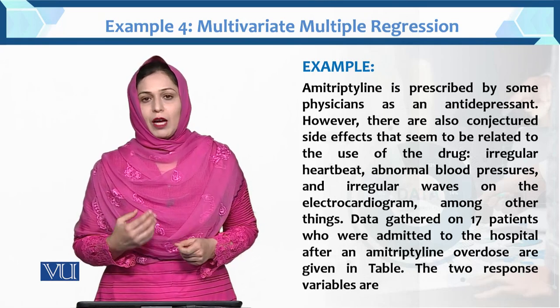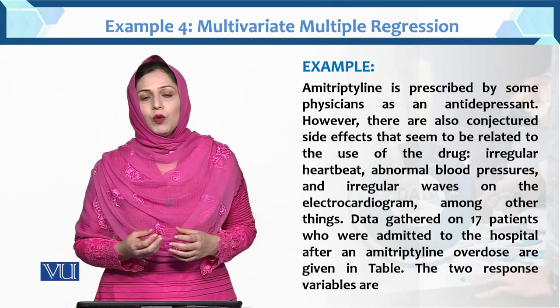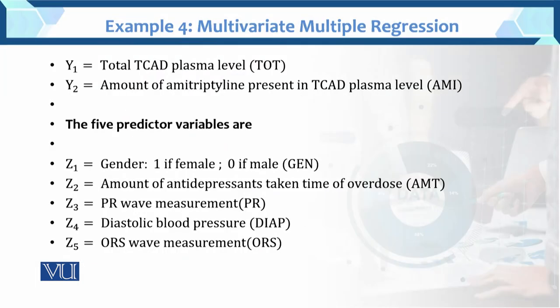There are two response variables, meaning we have two dependent variables. Y1 is the first dependent variable — the total TCDA plasma level, with notation TOT. And Y2 is also a dependent variable — the amount of amitriptyline present in the TCDA plasma level, with abbreviation AMI.